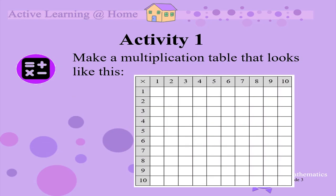Activity 1. You are going to make a multiplication table that looks like this. List the numbers from 1 to 10 on the side. List the numbers from 1 to 10 on the top. Show the multiplication sign in the top left-hand corner.